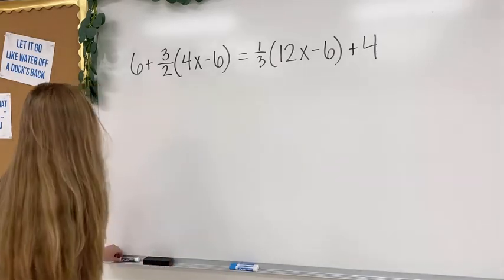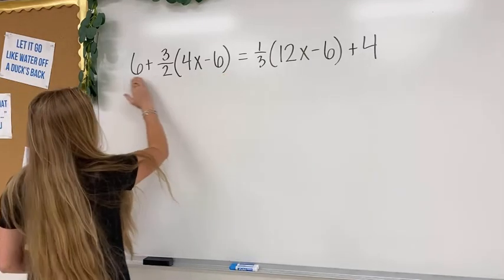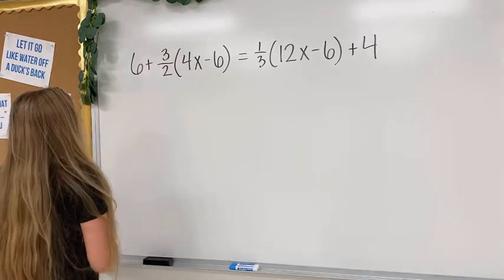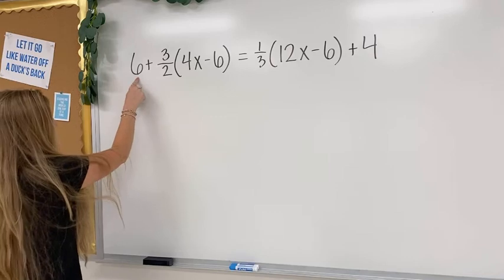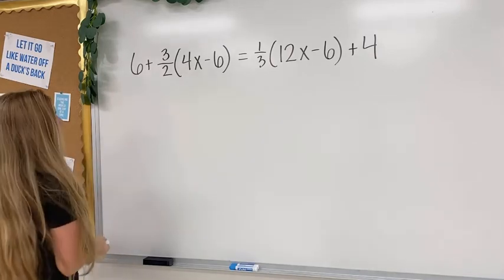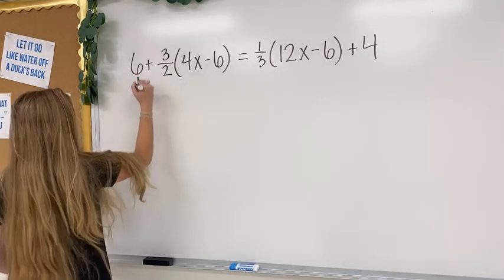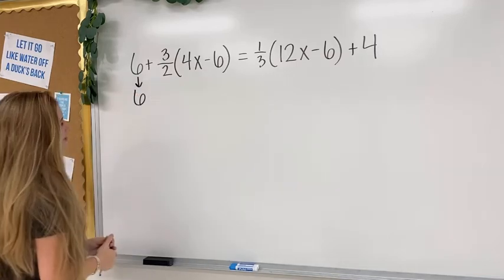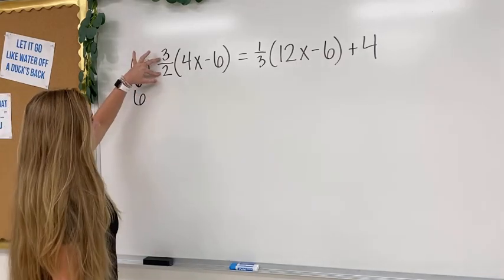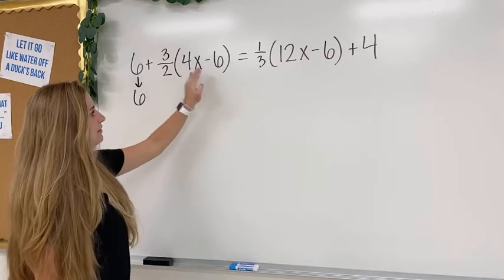I'm going to just look at this left side, and I realize that this 6 has no parentheses next to it at all. So I'm just going to literally bring it down. But then I see that I have 3 halves times both of these terms.